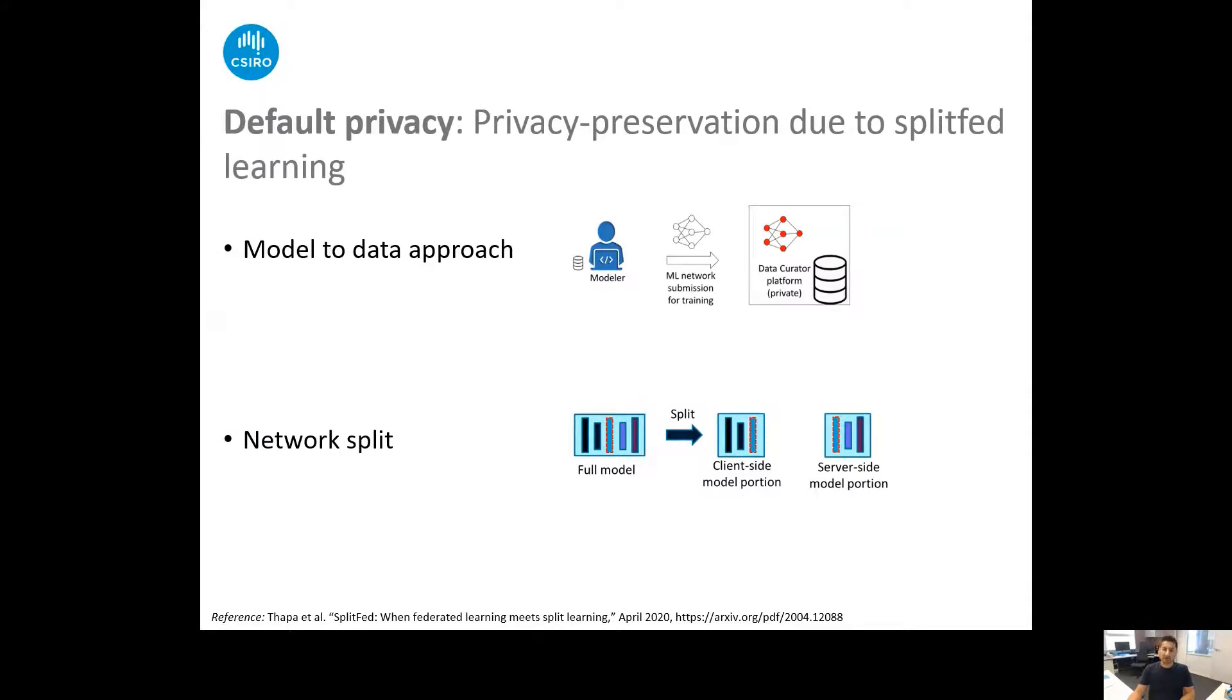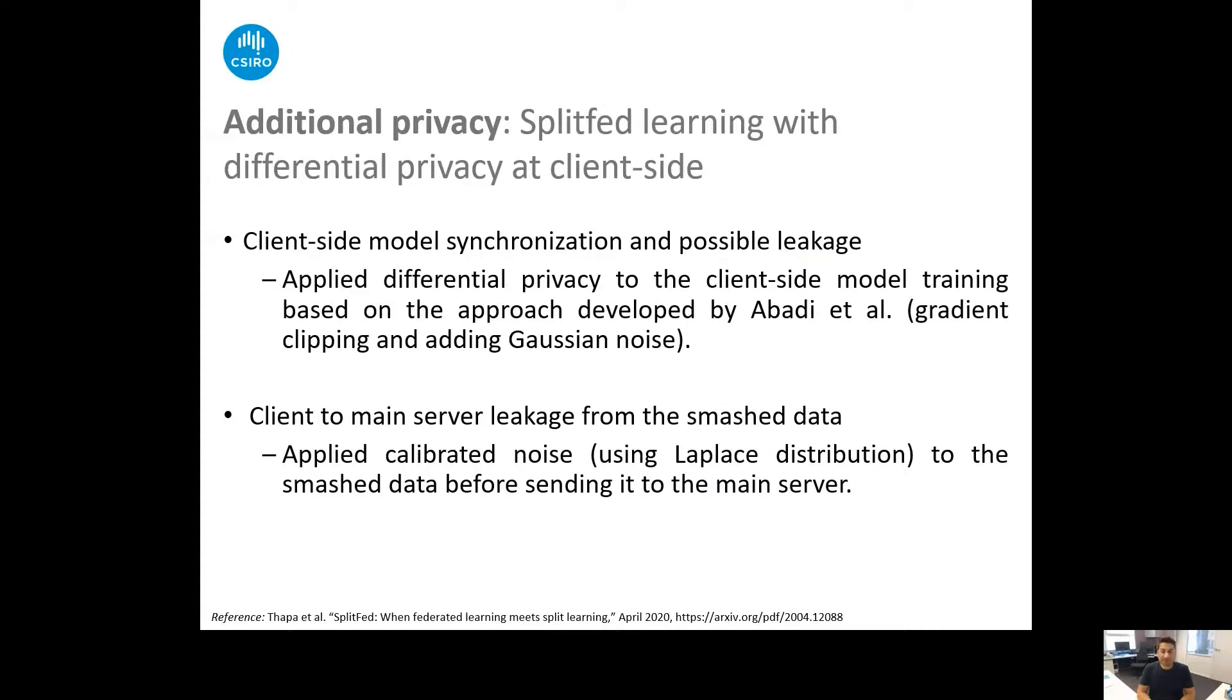So far we've seen the split-fed learning approaches. Now let's discuss the default privacy in this learning. We know this is a model-to-data approach. We send the models to the clients or the data custodians rather than pulling the data out of them. So this maintains a level of privacy and data control limits within the data custodians. The next point is the model privacy that we obtain from the network split. Client doesn't know about the updates on the server side and it's difficult for them to guess. If properly designed network then it is not even possible.